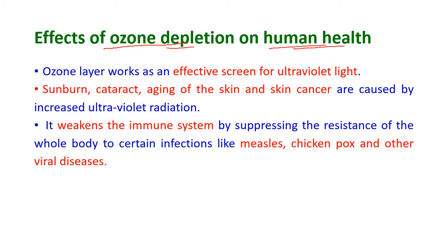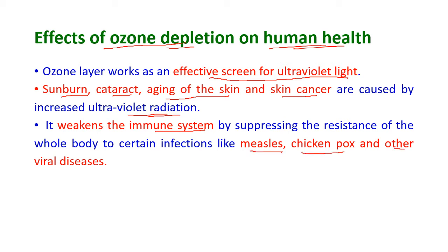The ozone layer works as an effective screen for ultraviolet light — it filters and stops UV light from reaching the earth. Without this protection, UV radiation causes sunburn, cataracts, aging of the skin, and skin cancer. It also weakens the immune system by suppressing the body's resistance to certain infections like measles, chickenpox, and other viral diseases.